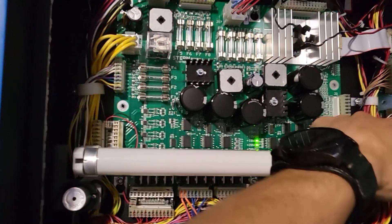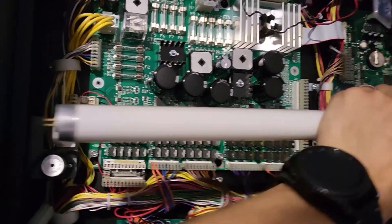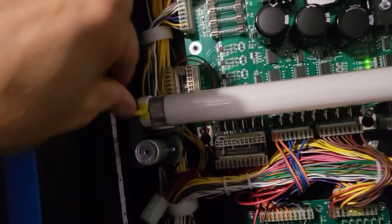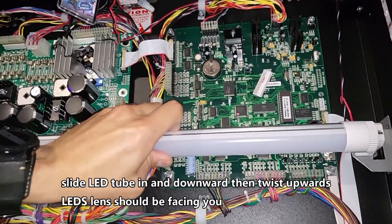Alright, so first things first, we're going to remove the CCFL tube by twisting it and wiggling it out. If you have one of these tabs, simply pull them out. Let's go ahead and twist and pull out.